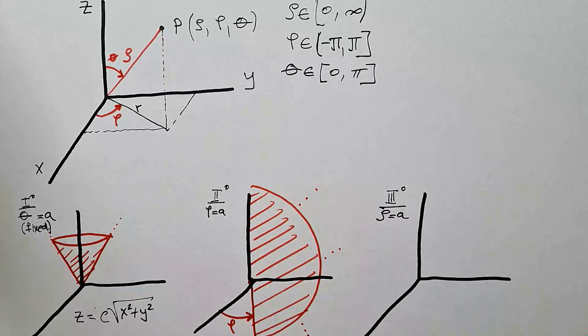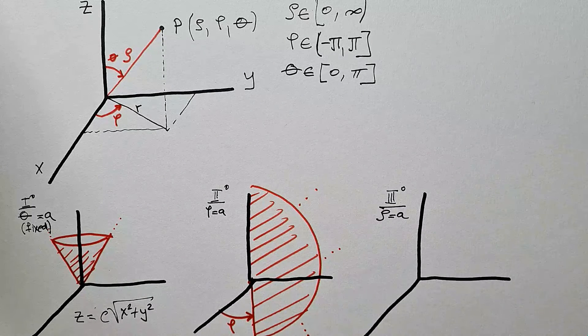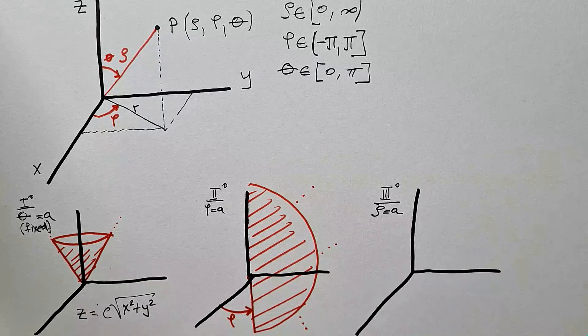So, we get this shape that looks like a fan, but formally, it is called half disc.